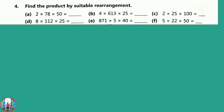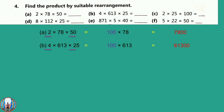Question number 4: Find the product by suitable rearrangement. We know we can multiply in any manner, so we multiply by our convenience. First question: 2 into 78 into 50. We will multiply 50 into 2 first, that is 100. Then 100 into 78 is 7,800. Question number B: 4 into 613 into 25. Now 25 into 4 is 100. Then 613 into 100 is 61,300. Question number C: 2 into 25 into 100. That is 25 into 2 giving 50, and 50 into 100 is 5,000.